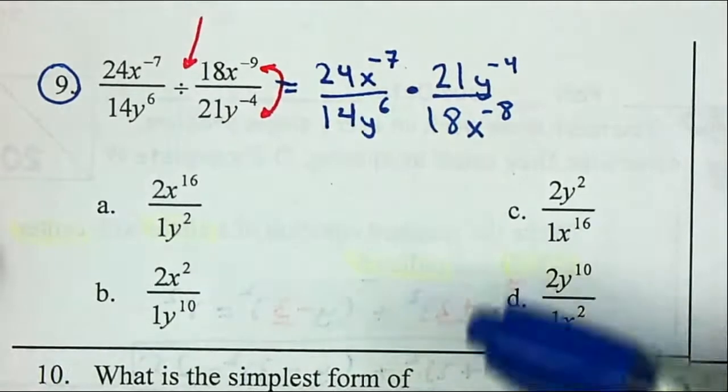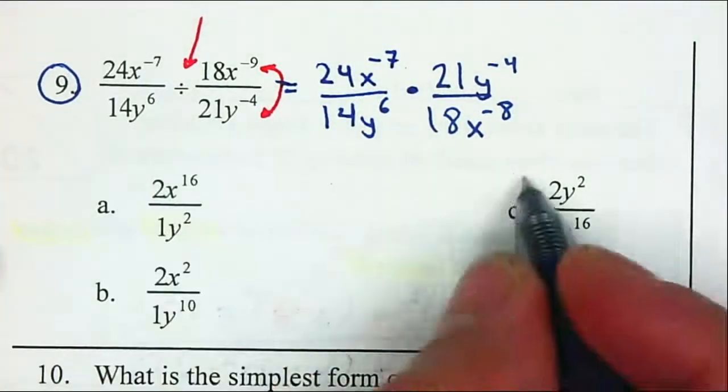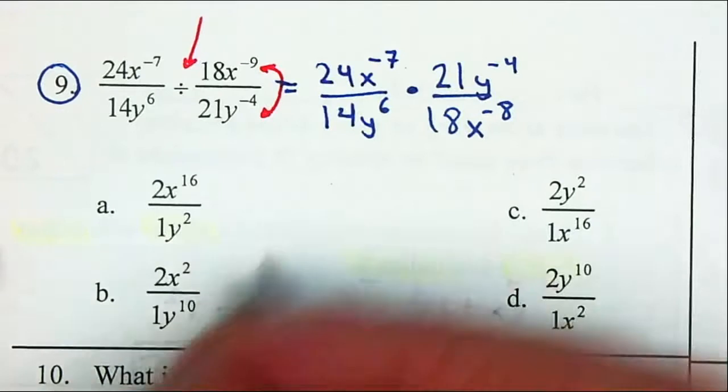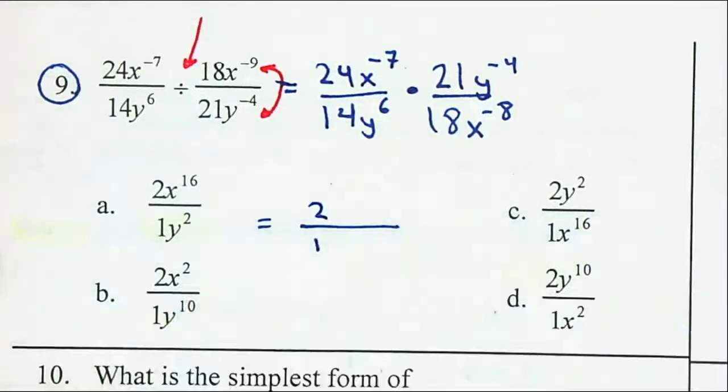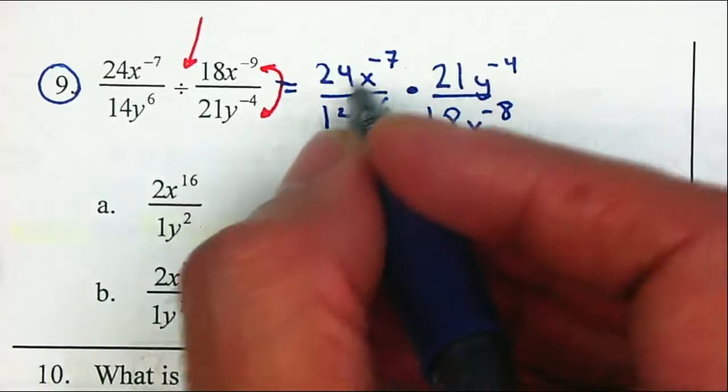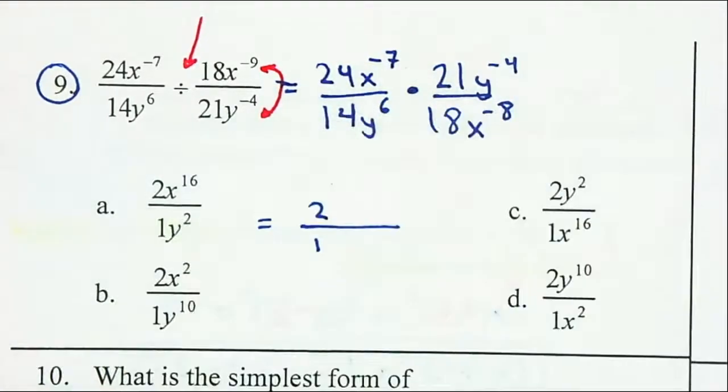And from here we simplify. Now, if you notice, all of your answers have 2 and 1. So I know that my answer should have a 2 and a 1. So I'm not going to worry about the coefficients. I'm just going to worry about the exponents.